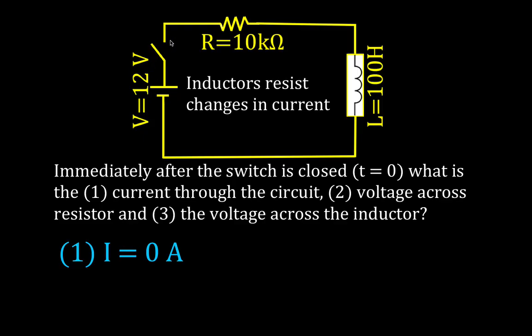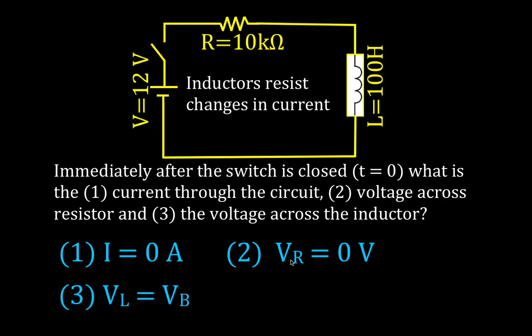That's the current through the battery, through the resistor, through the inductor — it's a series circuit, so the current through the entire circuit is zero. The voltage across the resistor: V equals I times R by Ohm's law, and there's no current, so the voltage across the resistor is zero volts. But the switch is closed and we have a 12 volt source, so if there's no voltage across the resistor, that 12 volts is across the inductor. The voltage across the inductor when we first close the circuit is equal to the voltage of the battery, 12 volts.